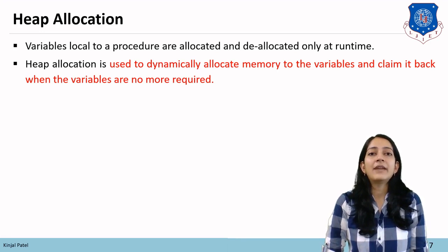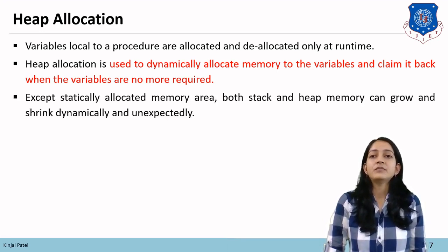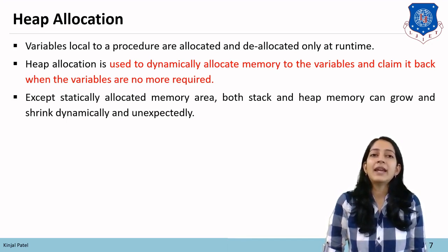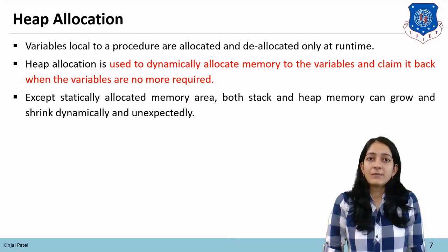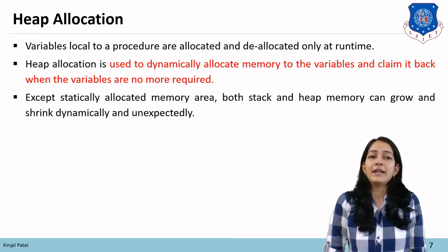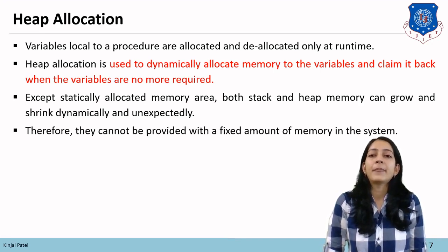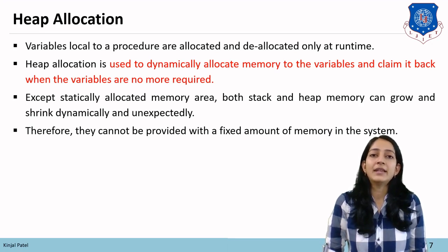The problem of dangling reference can be solved using heap allocation strategies. Except for the statically allocated memory area, both stack and heap memory can grow and shrink dynamically and unexpectedly, because in static allocation fixed-size blocks are used. Therefore, stack and heap cannot be provided with a fixed amount of memory in the system.